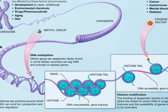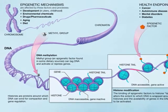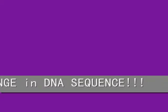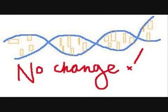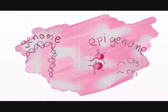Hence the name 'epi,' which is Greek for 'over and above,' genetics. These changes may remain through cell divisions for the remainder of the cell's life and may also last for multiple generations. However, there is no change in the underlying DNA sequence of the organism. Instead, non-genetic factors cause the organism's genes to behave or express themselves differently. In modern scientific discourse, epigenetics refers to heritable traits that do not involve changes in the underlying DNA sequence. Parallel to genetics, terms like epigenome and epigenetic code are used.